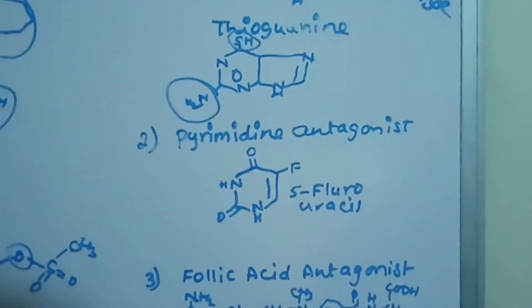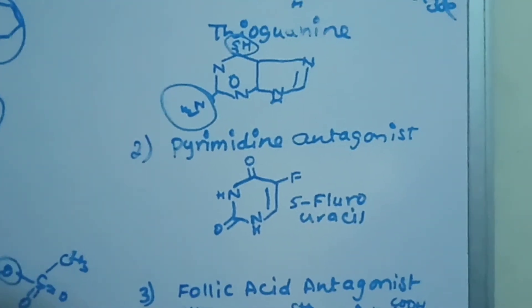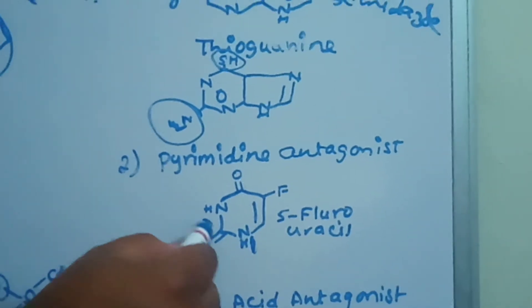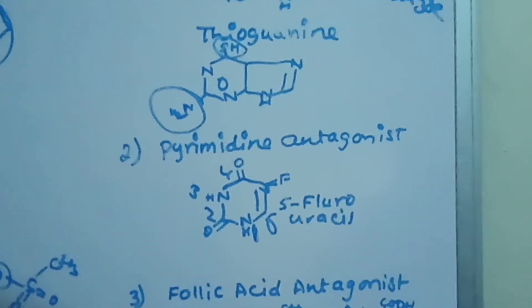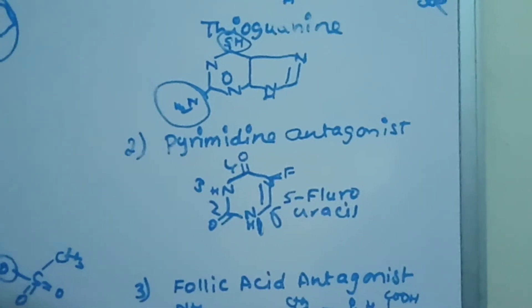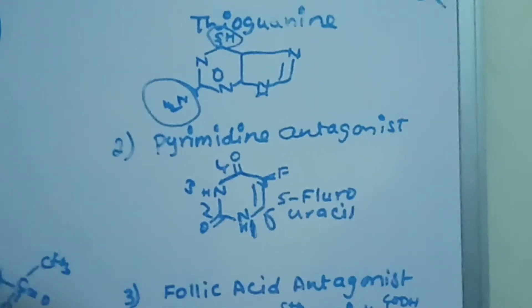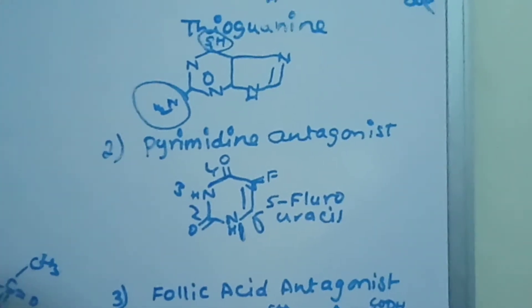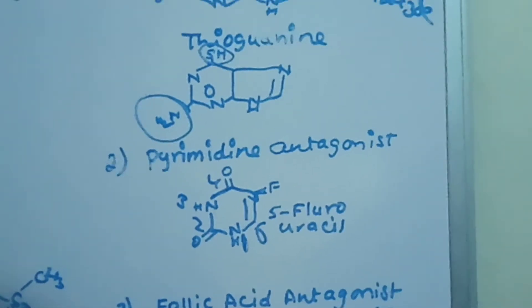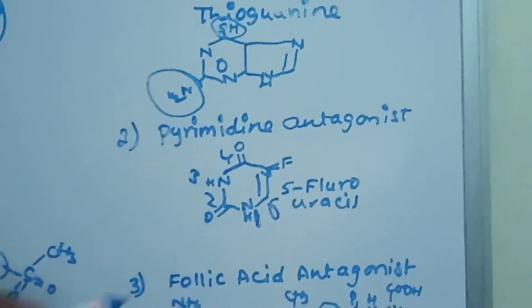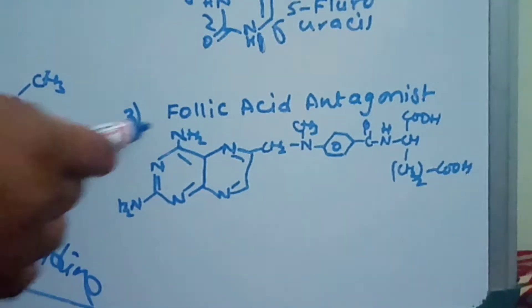The second category of anti-metabolites is pyrimidine antagonists. Pyrimidine is a six-membered ring containing nitrogen at the first and third positions. The example is 5-fluorouracil. Uracil is a pyrimidine base found in RNA. In 5-fluorouracil, a fluorine group is substituted at the fifth position of the uracil ring.